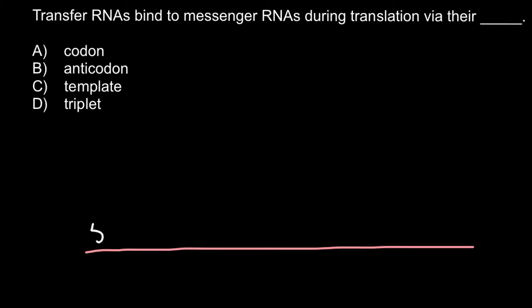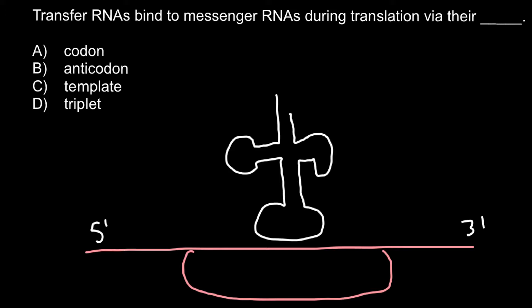Imagine that this is messenger RNA. Here is the 5 prime end and here we have the 3 prime end. First, the small ribosome subunit would bind to the messenger RNA.